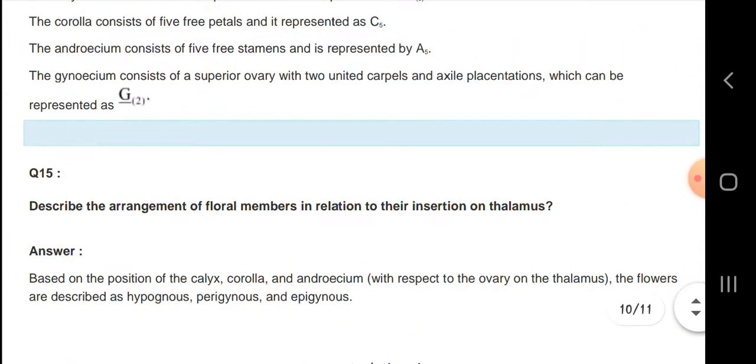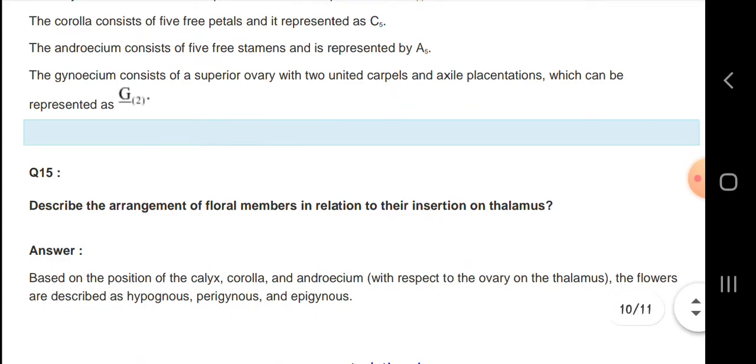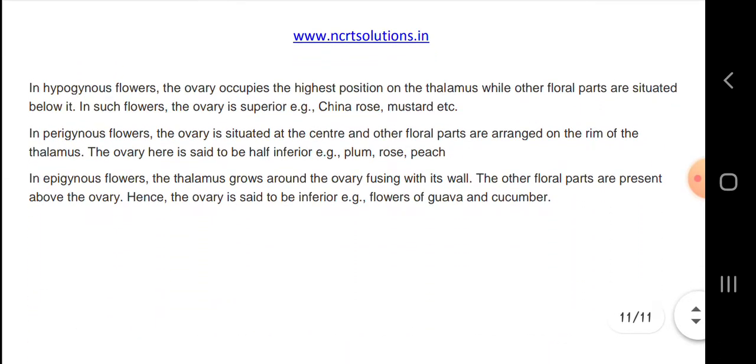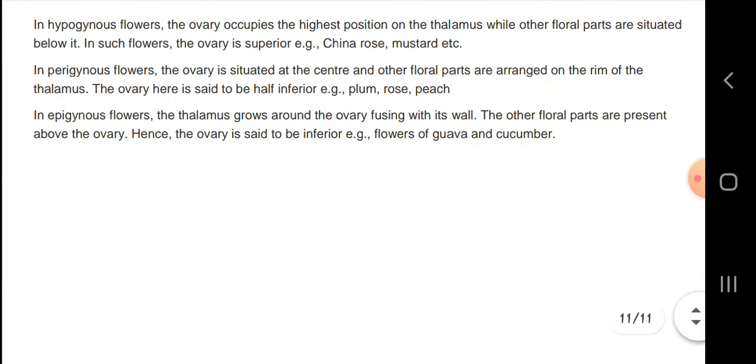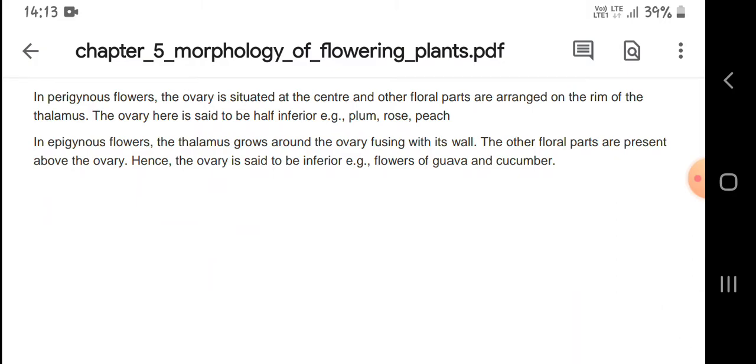The arrangement of floral members in relation to their insertion on thalamus. Types include hypogynous flower where the ovary occupies the highest position, perigynous flower where the ovary is situated at the center, and epigynous flower where the thalamus grows around the ovary, fusing with its wall.